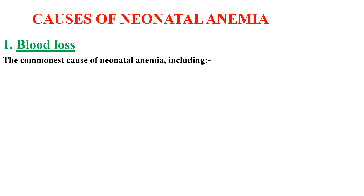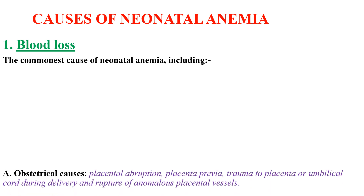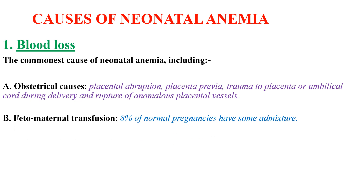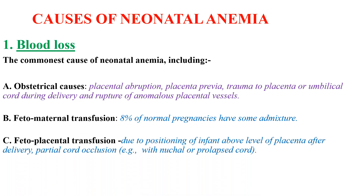To start with blood loss, it is the most common cause of neonatal anemia. The most common causes of blood loss in neonates are obstetrical causes such as placental abruption, placenta previa, trauma to the placenta or umbilical cord during delivery, and rupture of anomalous placental vessels. There are also fetomaternal transfusion and fetoplacental transfusion. Fetoplacental transfusion is due to positioning of the infant above the level of the placenta after delivery, and it can also be due to partial cord occlusion.